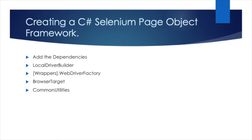To be successful in creating a C-sharp Selenium page object framework we need to do the following: first, add the dependencies we need; then create a local driver builder class; create a wrappers folder with a web driver factory inside it; create a browser target; and finally wrap things up by creating a common utilities class.